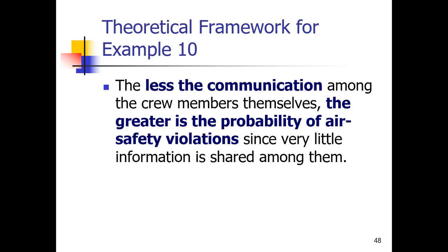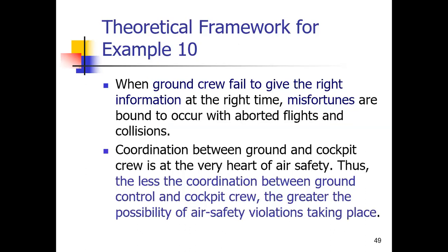For example, the less the communication among the crew members themselves, the greater is the possibility of air safety violation, since very little information is shared among them. The logic is that less communication among crew members means that when they are unable to share the right information at the right time, misfortunes occur — aborted flights and collisions.